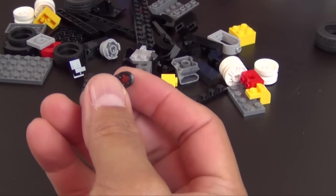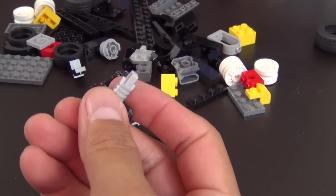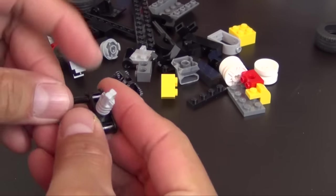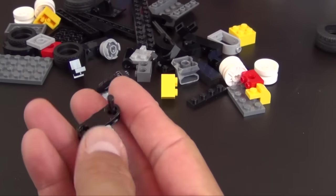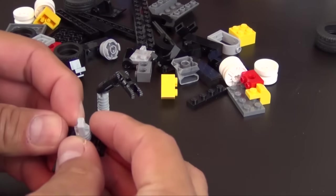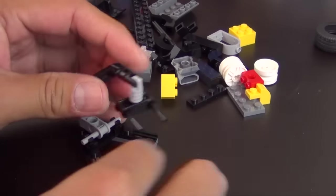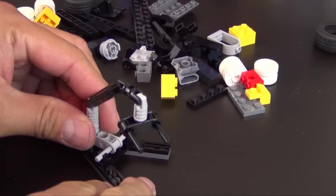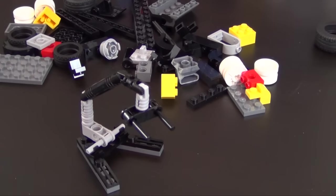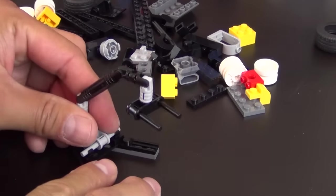That goes there and then the instructions show it kind of rotated like this. Next is some more technic pieces with a couple bars in here. So you can kind of see it's created this forklift shape. That's it for this thing, we'll go ahead and move it to the side.